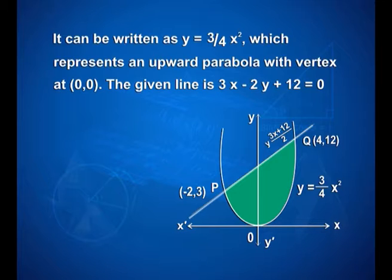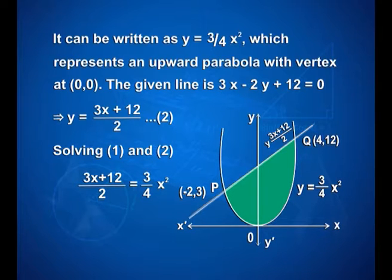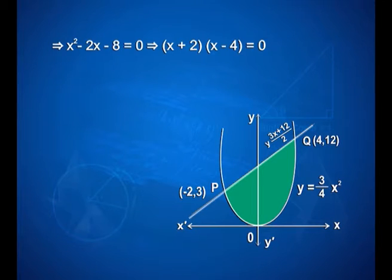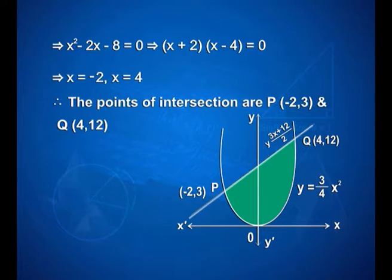The given line 3x minus 2y plus 12 is equal to 0 gives y is equal to (3x plus 12)/2. On solving equations 1 and 2, we get (3x plus 12)/2 is equal to 3/4 x square, which implies 6x plus 24 is equal to 3x square, giving x square minus 2x minus 8 is equal to 0. This factorizes as (x plus 2)(x minus 4) is equal to 0, so x is equal to minus 2 and x is equal to 4. The points of intersection are P(minus 2, 3) and Q(4, 12).